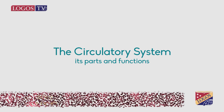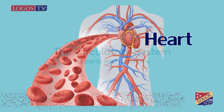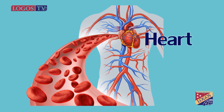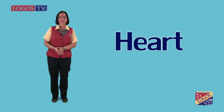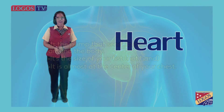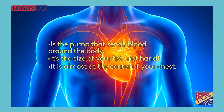The circulatory system is formed by the heart, blood, and blood vessels. The heart is the pump that sends blood around the body. It's the size of your fist, not of your hand. It is almost at the center of your chest.